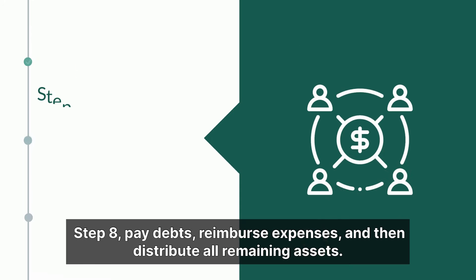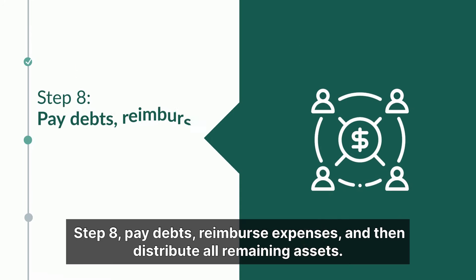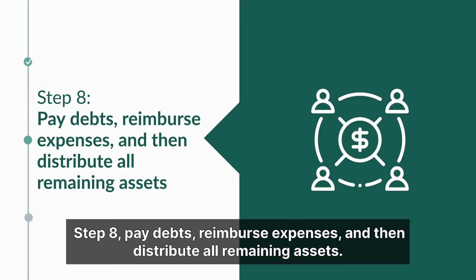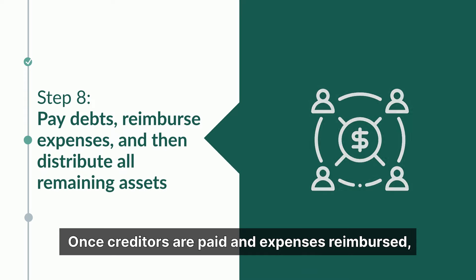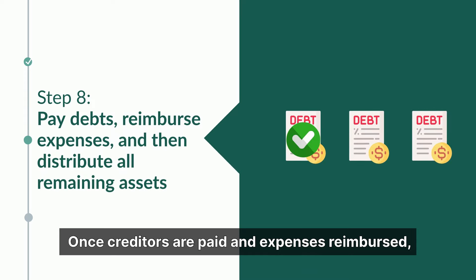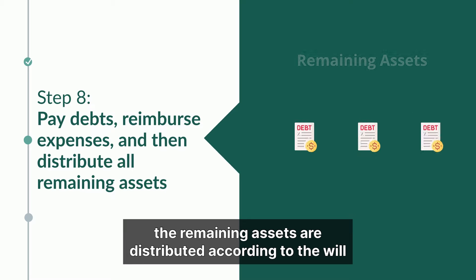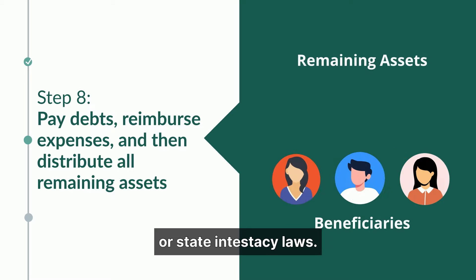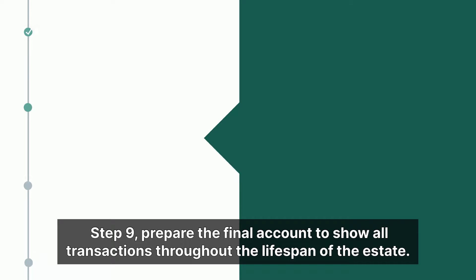Step 8: Pay debts, reimburse expenses, and then distribute all remaining assets. Once creditors are paid and expenses reimbursed, the remaining assets are distributed according to the will or state intestacy laws.